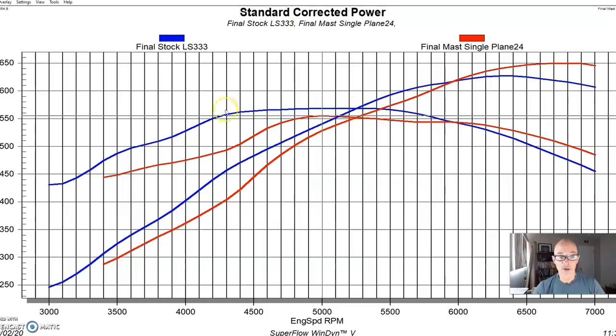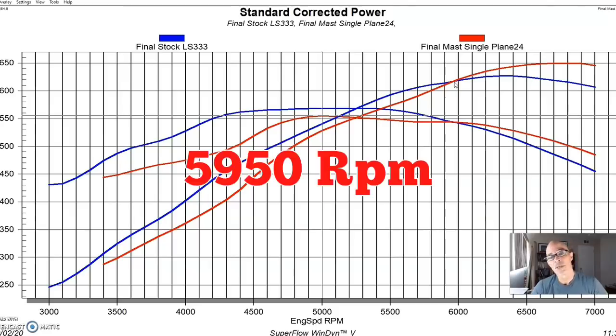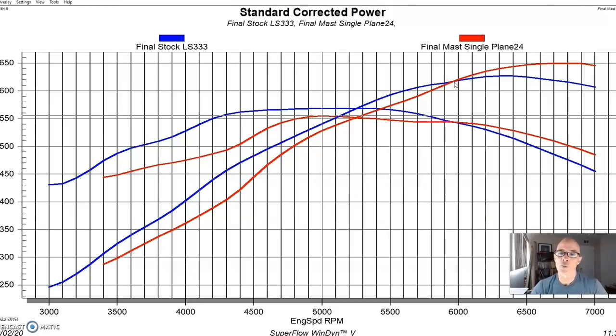And as we've seen, the long runner, in this case factory intake, produced more power than the single plane up to about 5900 RPM. So a very similar crossover point to what we saw with the larger 468-inch motor. And a little bit lower than we saw from 6350 down to 5950, lower than we saw on the smaller displacement motor.